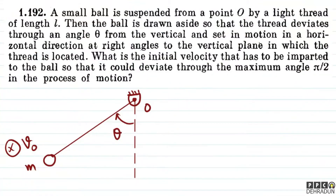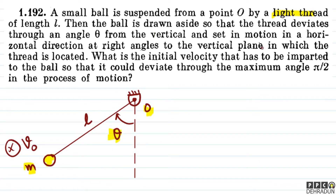So, this question — what is given to us? We are given a small ball of mass M, suspended from point O by a light thread of length L. This ball is pulled out such that it makes an angle theta with the vertical.